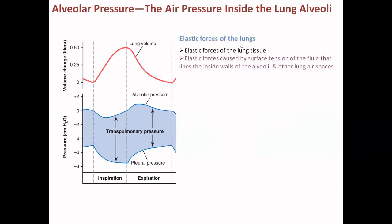The elastic forces of the lungs are responsible for the change in volume of the lungs. The first is the elasticity of the lung tissue — the elastic forces responsible for the lung tissue. The second is the elastic force called the surface tension of the fluid that lines the inside wall of the alveoli and other lung air spaces. These two important elastic forces are very much responsible in defining the transpulmonary pressure or the volume of the lung.